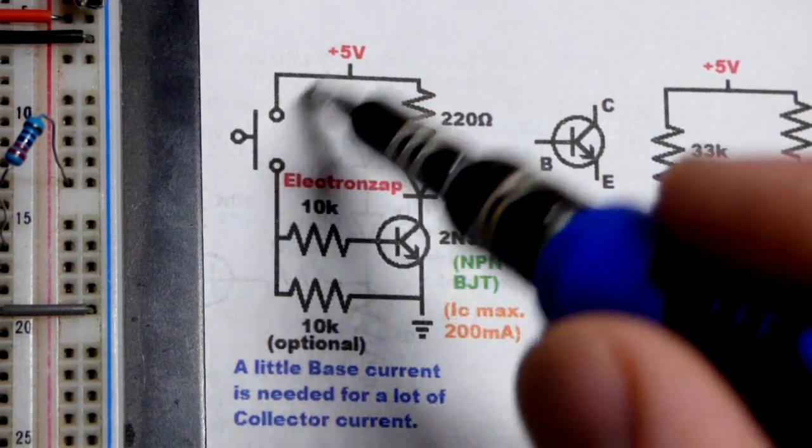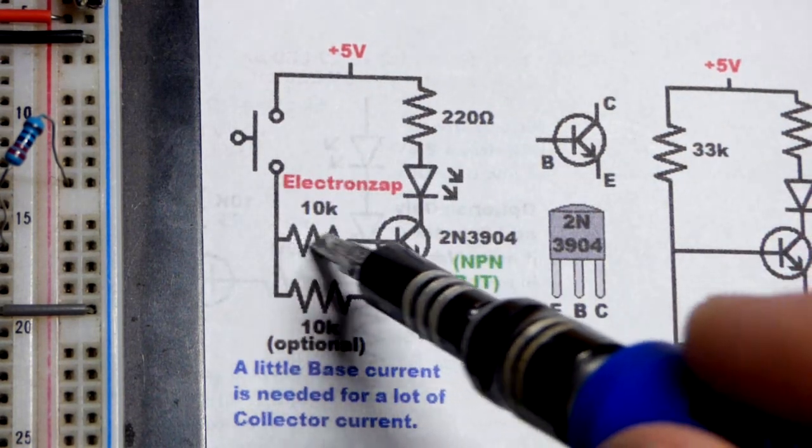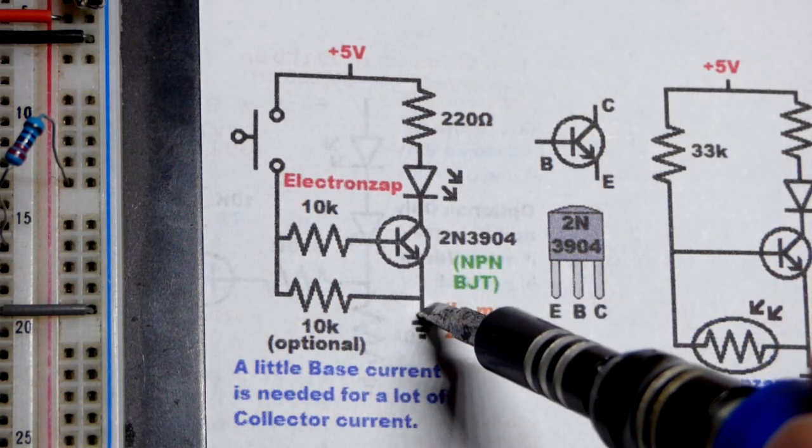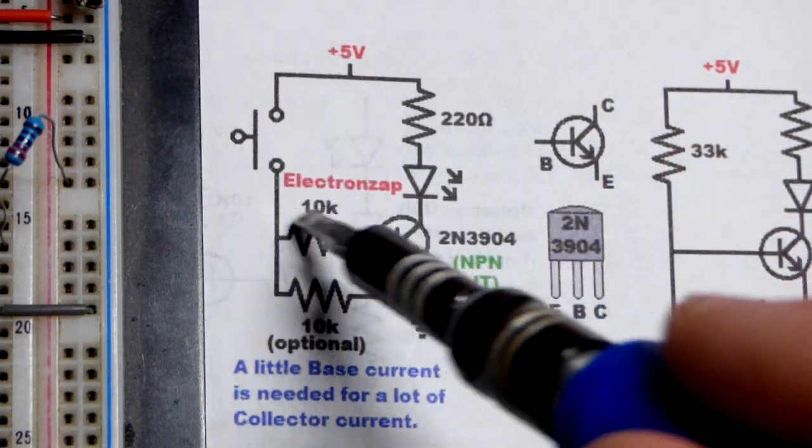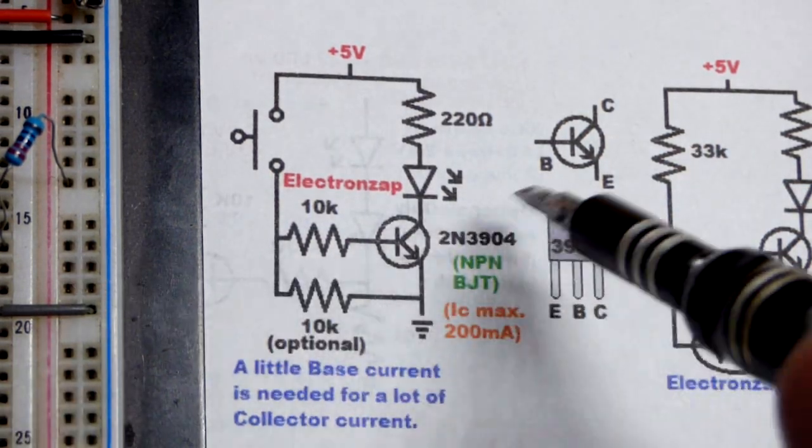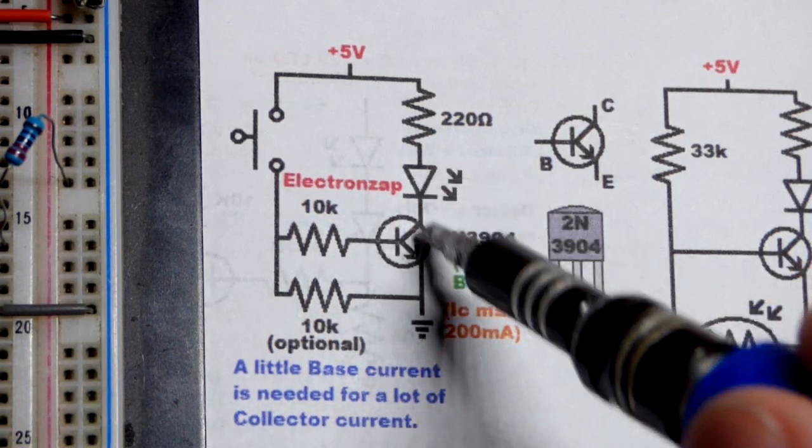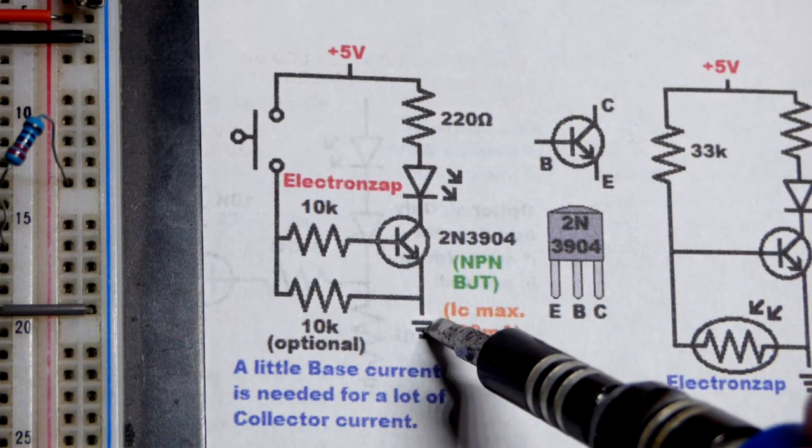But if we close the switch up there as we saw before, then a little bit of current flows because it's a 10,000 ohm resistor and it drops a diode drop, 0.6 volts, from base to emitter. A tiny bit of current, which the LED would barely be visible as lit with just that current, allows a lot more current to flow from collector to emitter.